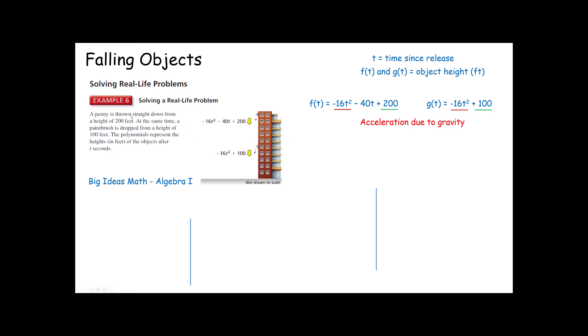The second thing I want to make sure I draw your attention to is this 200 and this 100. If you look at the original problem, a penny is thrown straight down from a height of 200 feet. That corresponds to this 200 right here. In other words, if I were to stick in zero seconds, this term would become a zero. This term would become a zero and I have an initial height of 200 feet. The same thing over here. It says at the same time a paintbrush has dropped from a height of 100 feet. If I stick in zero seconds, this plus 100 on the end is going to represent the height at the start of the problem. That's the initial height. And then lastly, you've got this negative 40t, this negative 40t in here.